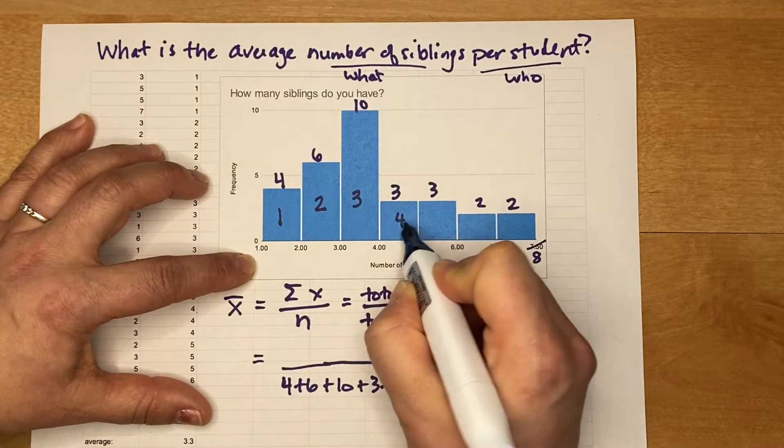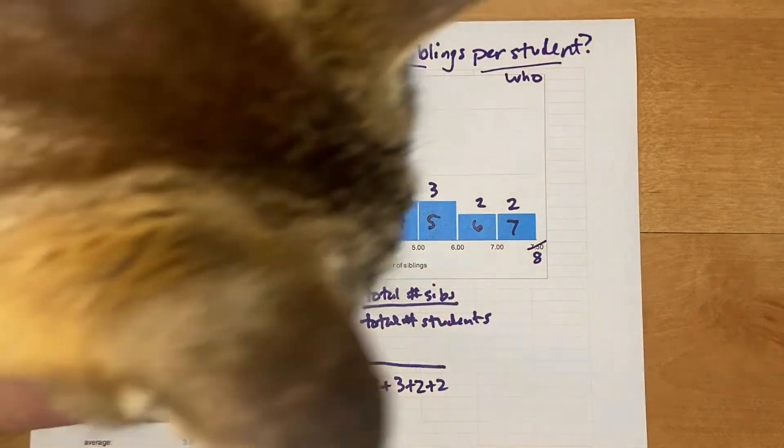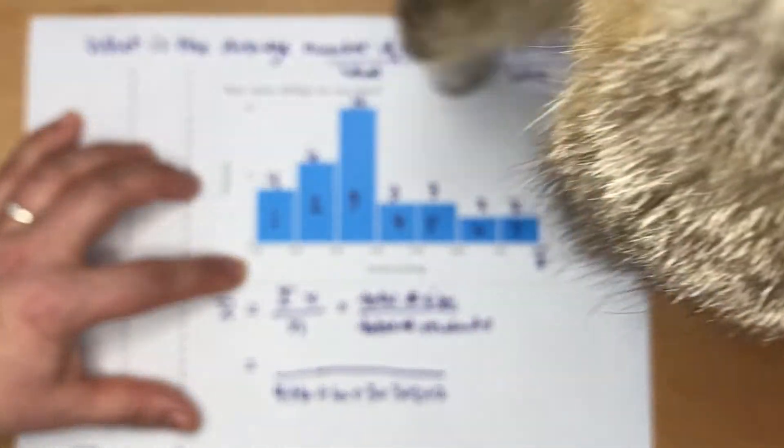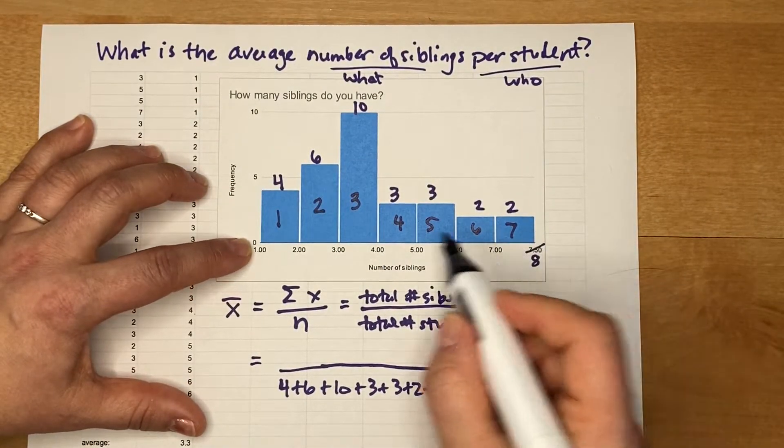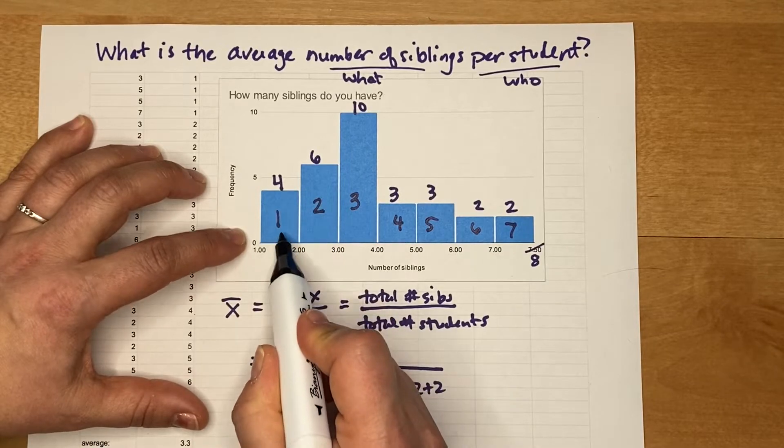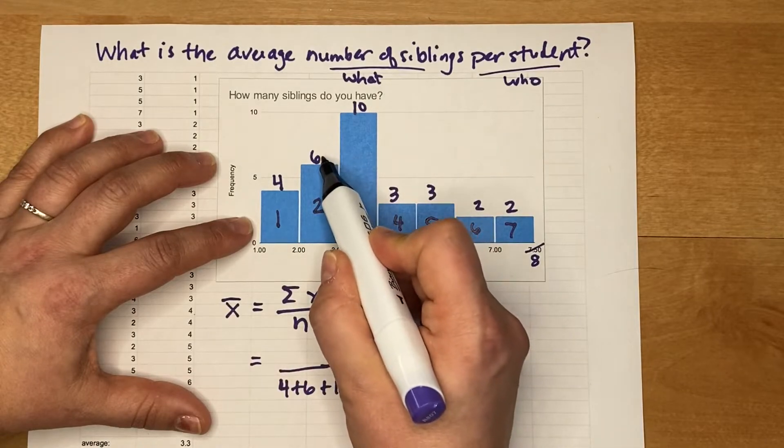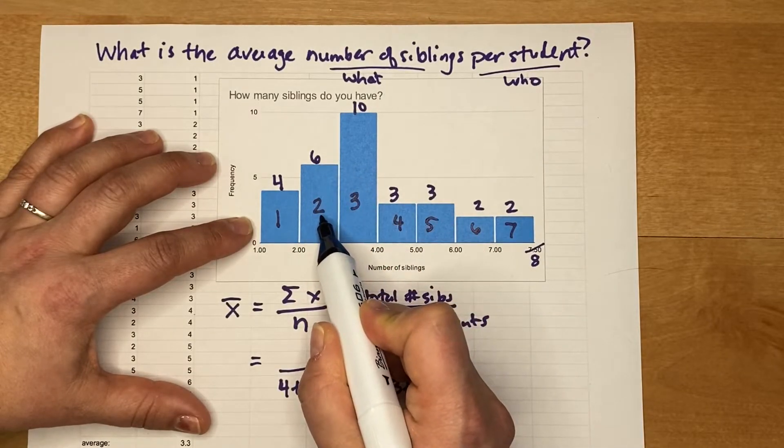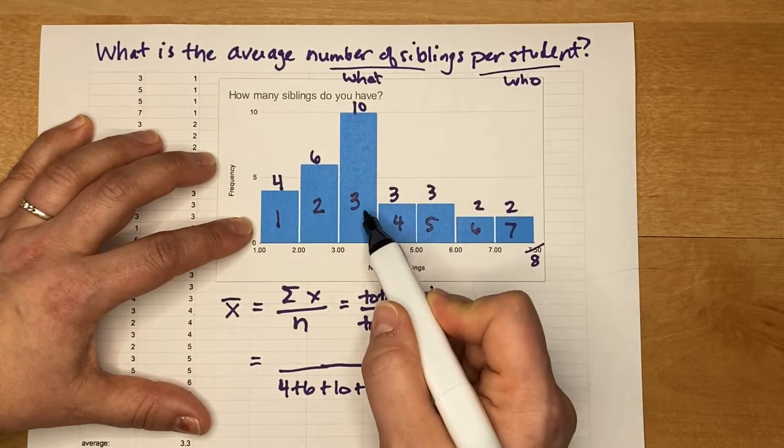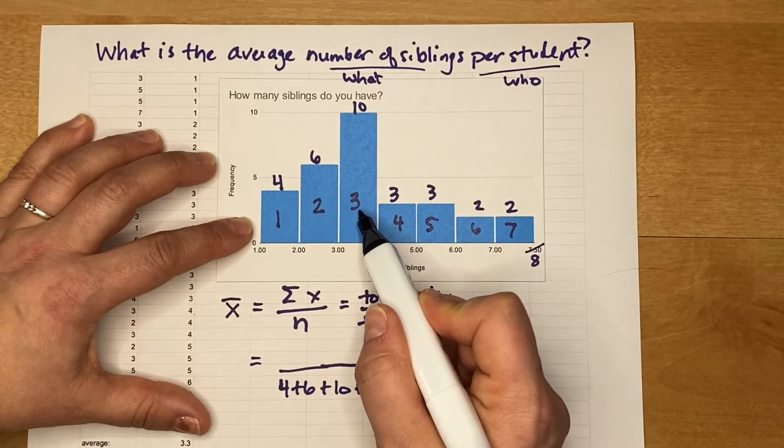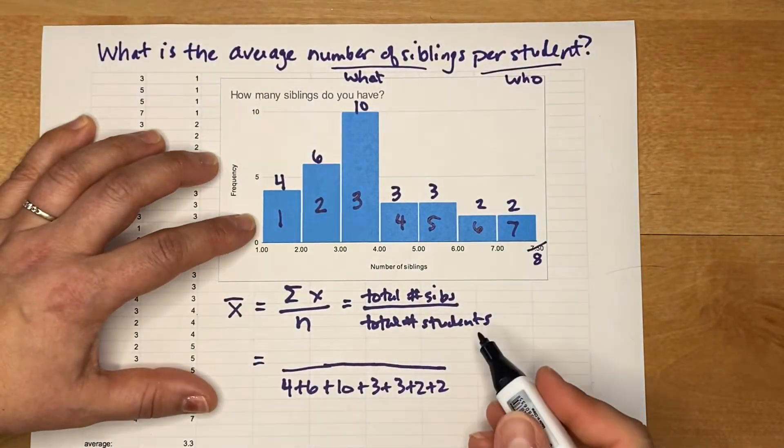Oh there is a cat to visit. So when we think about four students having one sibling each, that's a total of four siblings. Then we have six students that have two siblings each, so that's twelve siblings in that group of people. Then we have ten students with three siblings each, so now we have thirty siblings because ten times three makes thirty.